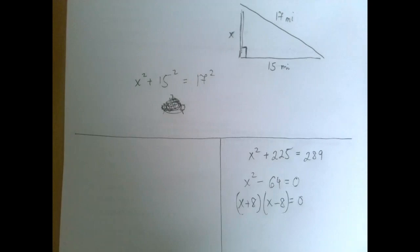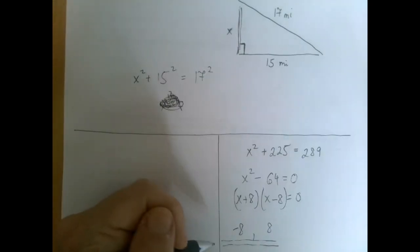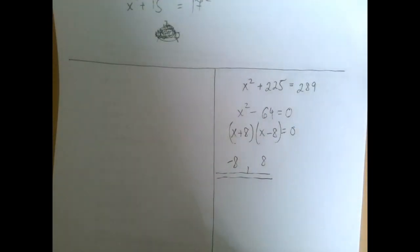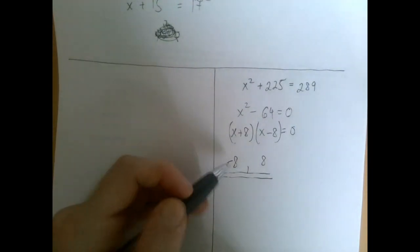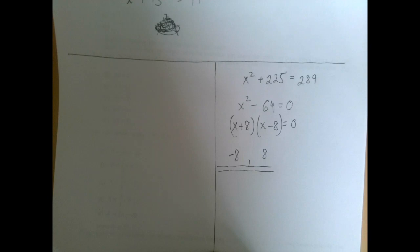And now applying the zero product rule, we get minus 8 and 8. That's the end of algebra. Algebra will spit out all the numbers that work algebraically. Now we're going to take the result, 8 and negative 8, back to the context of our problem, which is that x represents a distance, and therefore it cannot be a negative number. Negative 8 can be easily ruled out.